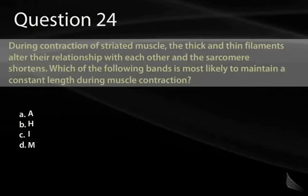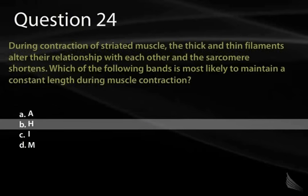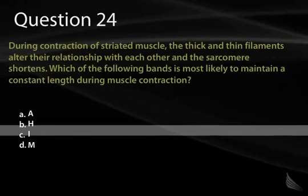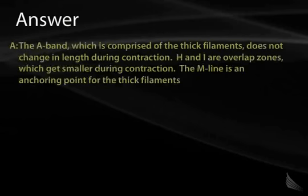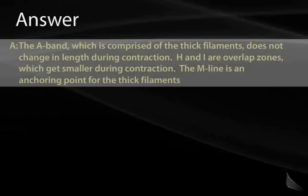Question 24. During contraction of striated muscle, the thick and thin filaments alter their relationship and the sarcomere shortens. Which of the following bands is most likely to maintain a constant length during muscle contraction? A, the A-band. B, the H-band. C, the I-disc. Or D, the M-disc? The correct answer is A. The A-band corresponds only to the length of the thick filament, which doesn't change. It has no correspondence to the overlap between bands in the sarcomere.